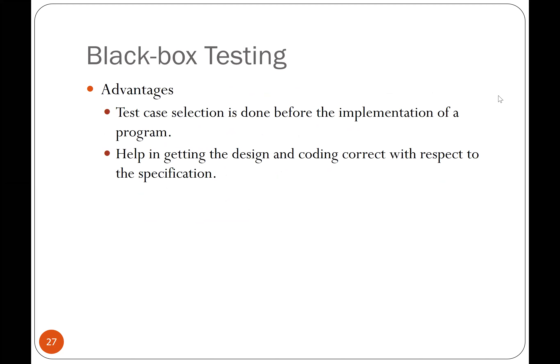For example, if we're creating a system for an ATM machine, I haven't written a single line of code or even a use case, and yet I can think of a test case: I have 10,000 riyals in the bank, I'm going to withdraw 1,000 riyals — so the output should be 1,000 riyals dispensed and a balance of 9,000 riyals. As mentioned in previous lectures, this helps correct our understanding of the requirements in case there's a misunderstanding, meaning that black box testing helps get the design and coding correct with respect to the specification.